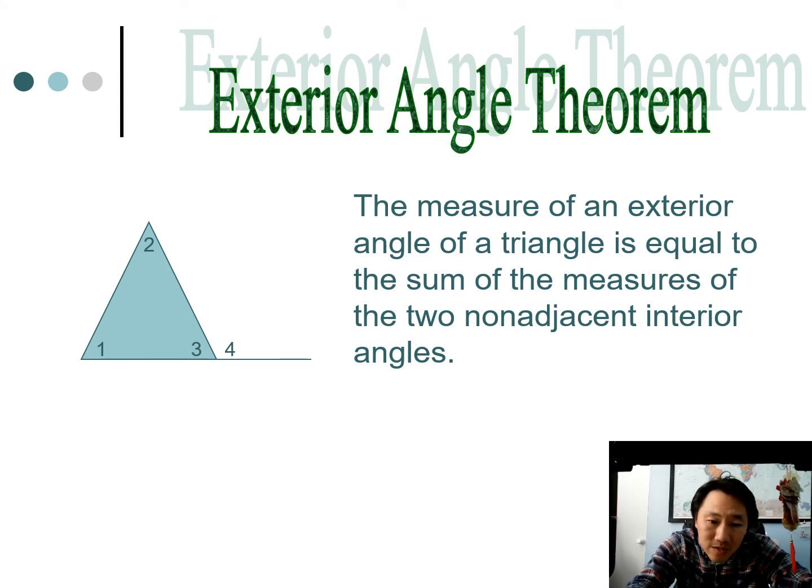So it says that this angle, the exterior angle, is equal to the sum of the measures of the two non-adjacent interior angles. So non-adjacent means not next to interior angles, so not next to would be that and that. All right, here's what it looks like in an equation.